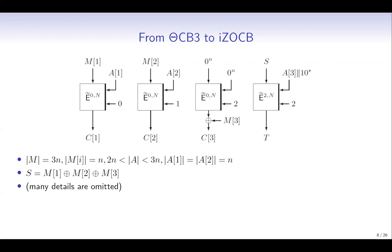With this big tweakable block cipher tilde-E, we can design an AEAD scheme that we call IZO-CB. Tilde-E takes a nonce, counter, and the AD block as the tweak input, and we also have domain separation. This illustrates the case for plaintext of three blocks and AD of less than three blocks. S is the checksum, which is the XOR of all the plaintext blocks. We see that there is no separate process for AD.